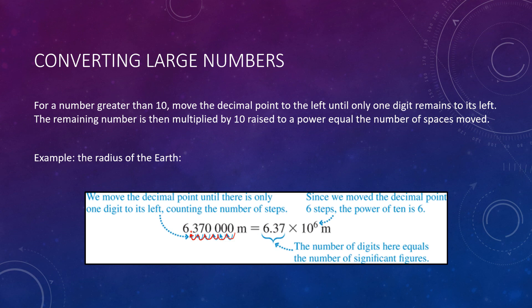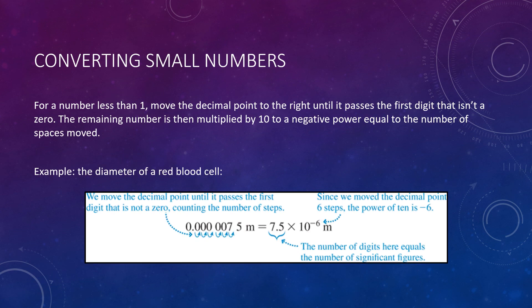Okay. Well, that's if you have big numbers, but if you have small numbers, well, the process is still generally the same, but we just move in the opposite direction. For a number that's less than 1, you move your decimal place to the right until it passes the first non-zero digit. So, we're going to move over, and this is for the diameter of a red blood cell. We're going to move over 1, 2, 3, 4, 5, 6 spaces, and put our decimal place there. The remaining number, 7.5, is then multiplied by 10, raised to a negative exponent. Since we move to the right, and it's a small number, less than 1, it's a negative exponent. So, we get negative 6. So, in other words, the diameter of a red blood cell, which is 0.00000075 meters, can be written as 7.5 times 10 to the minus 6 meters.